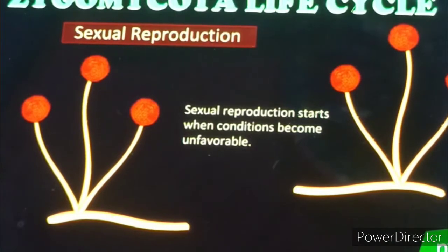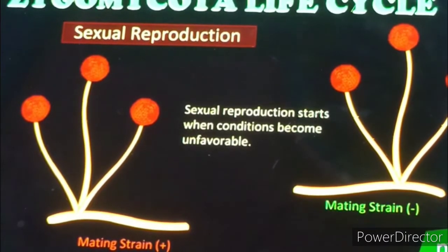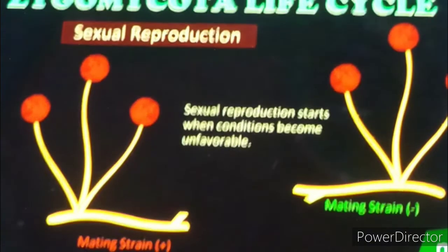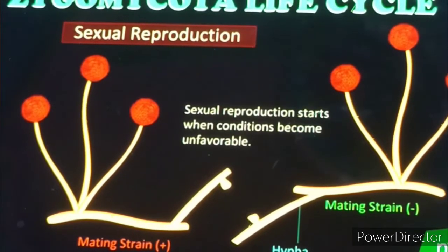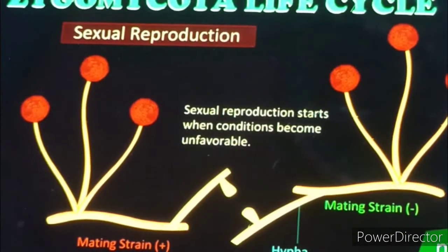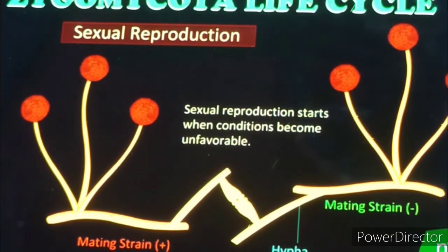This process continues. Again, mating occurs — plus and minus strands are shown. These two will come together under unfavorable conditions, and the same process repeats again. In this way its growth continues rapidly.